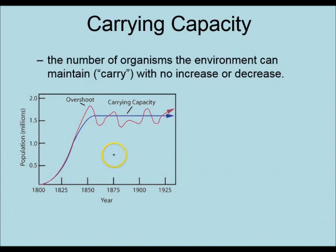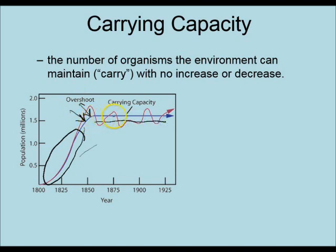No population can grow exponentially forever — it eventually reaches a plateau called the carrying capacity of that ecosystem for that species. It is the number of organisms the environment can maintain. We see the J-shaped curve's exponential growth, but some limiting factor affects the population and levels it off. The population may fluctuate around that level, but it will never consistently exceed it because of those limiting factors. This will eventually happen even for the human population.